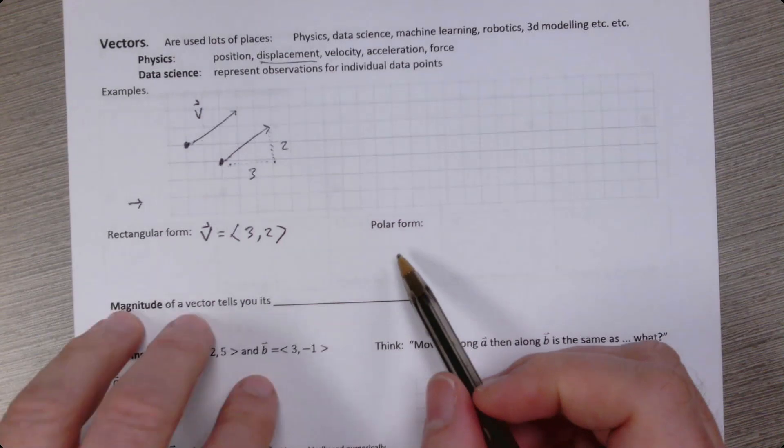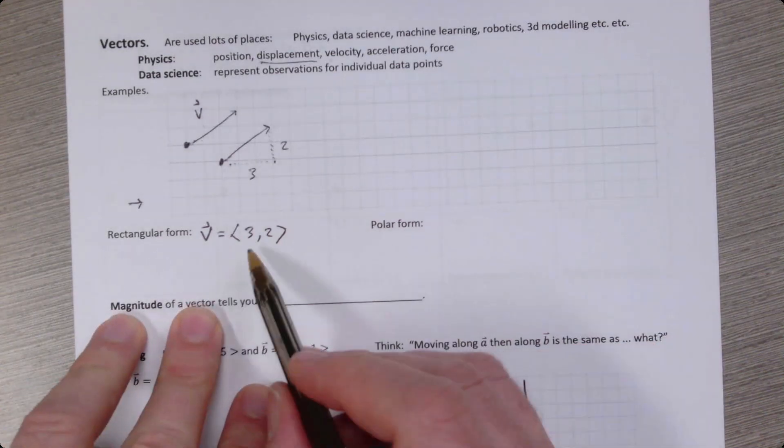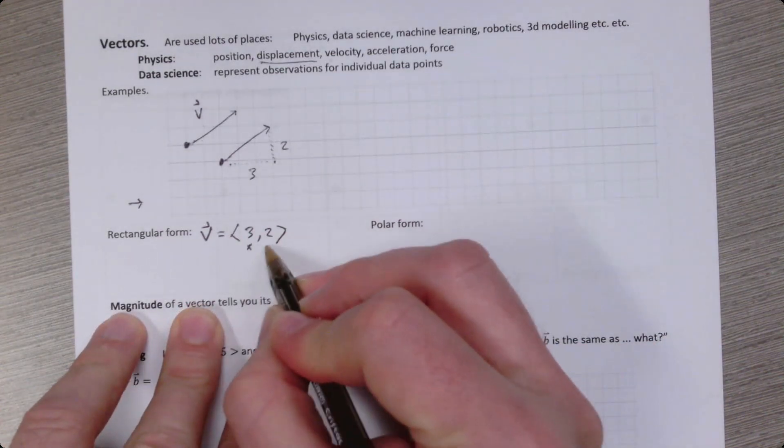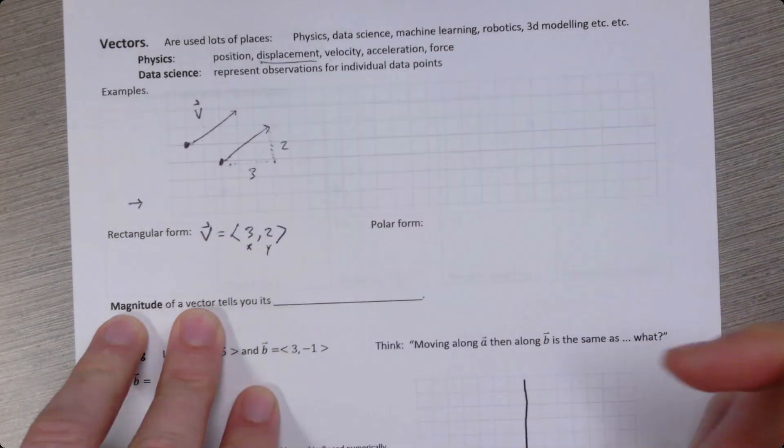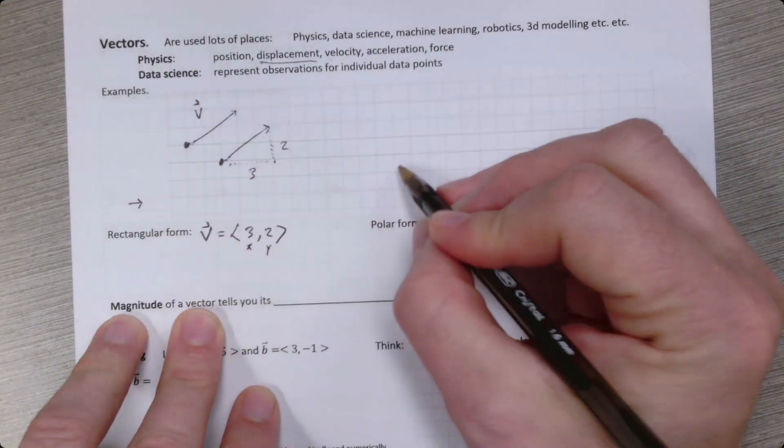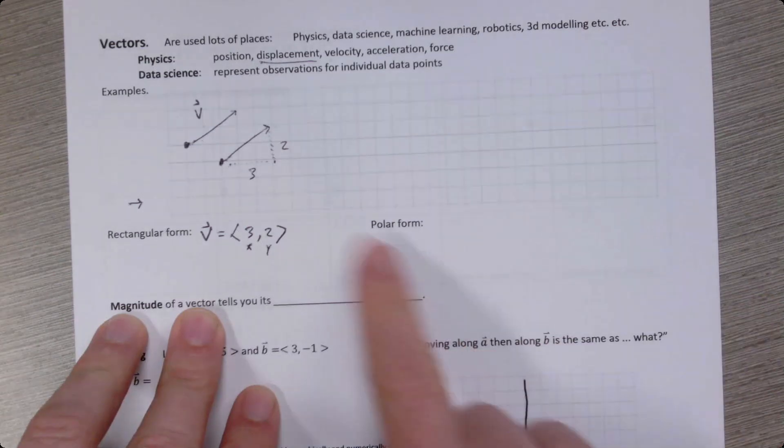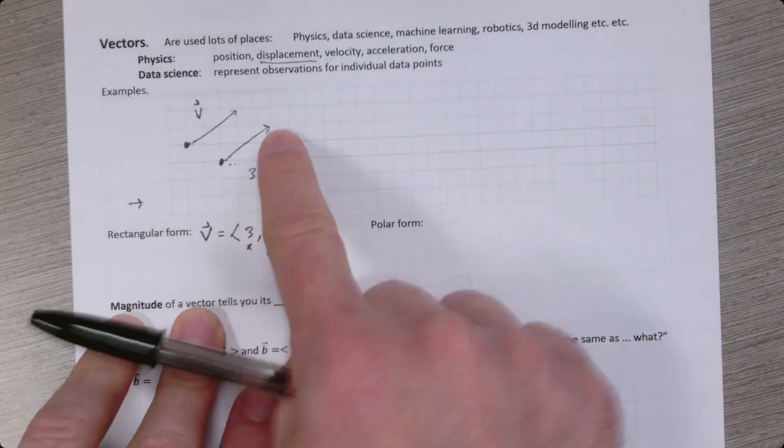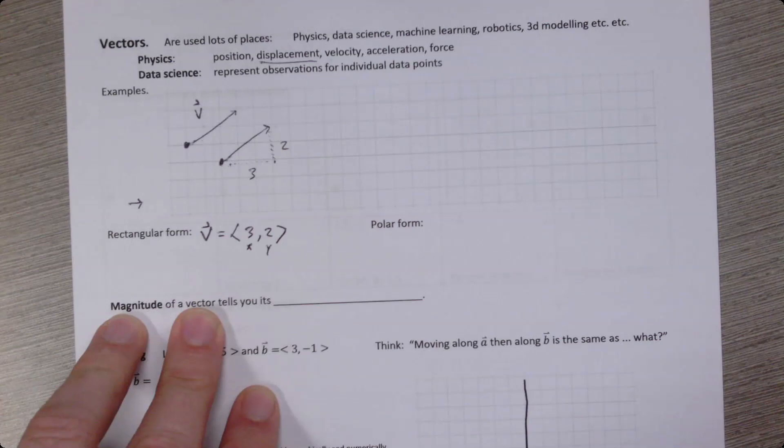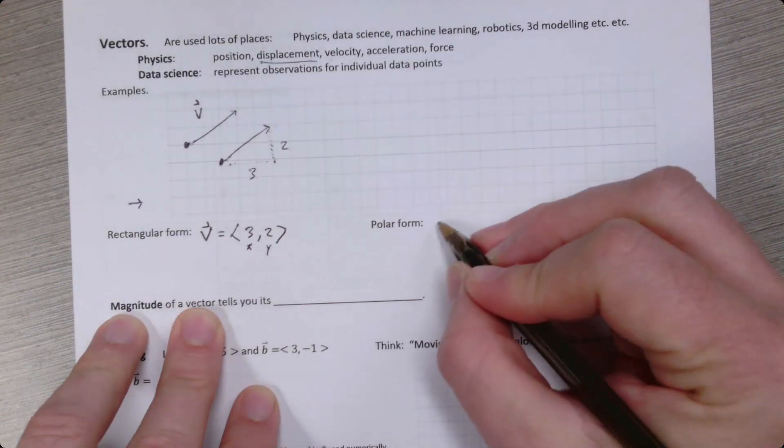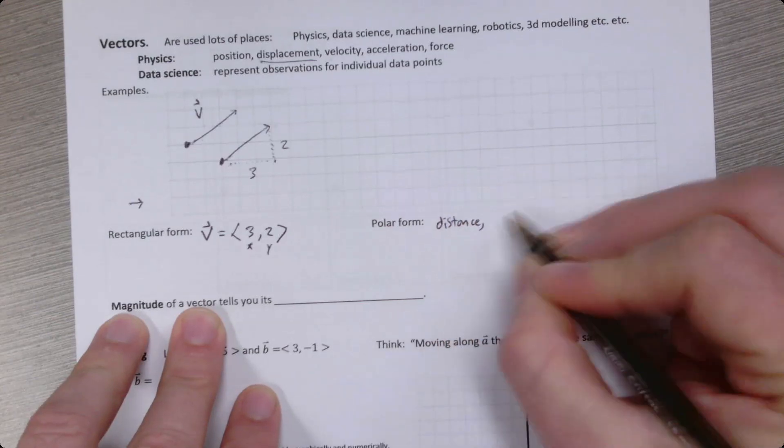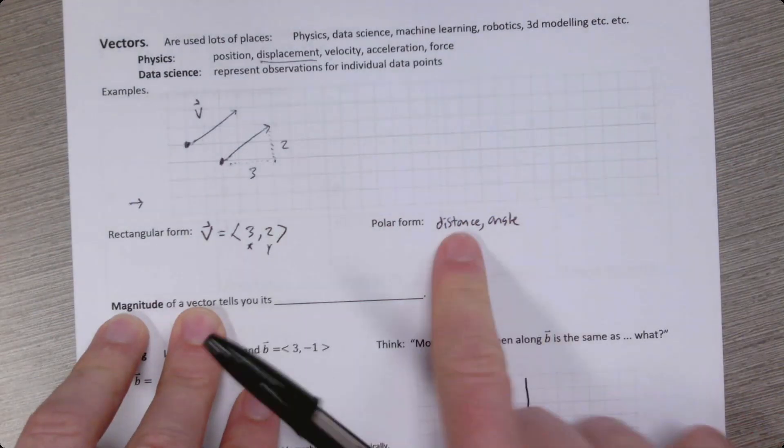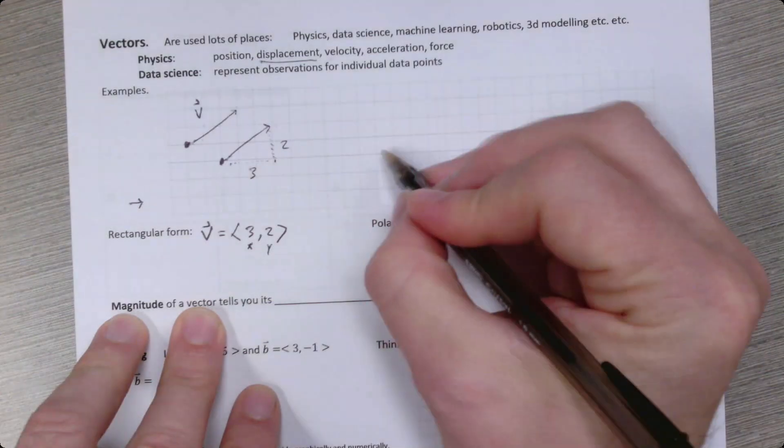Another way of describing vectors is not using their rectangular components. These are called the x component and the y component, because it's how far over, how far up. The other way of describing a vector would be literally with its angle and the distance that you would move along that angle. And that's called polar form. So polar form, you will have a distance and an angle, which gives you a direction, a distance and a direction.